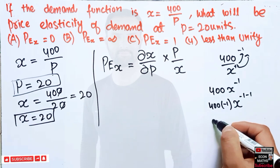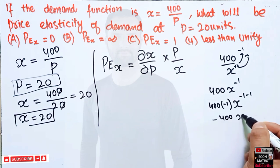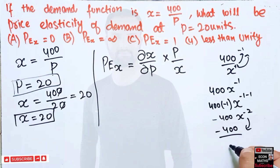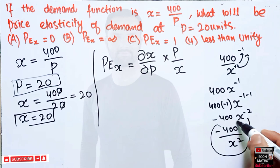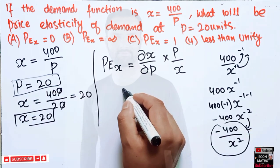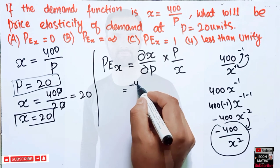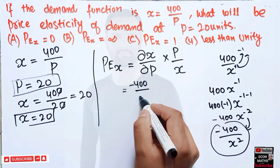Just using this formula, I got this. So we are left with minus 400x to the power minus 2. It can be written as minus 400. Now transposing to the denominator, it will become x square. So the derivative of our demand function is minus 400 upon x square.